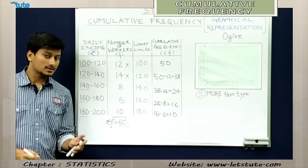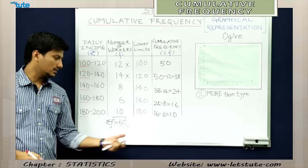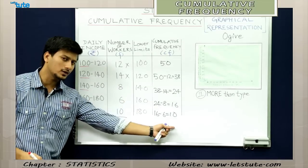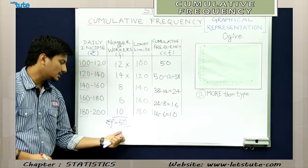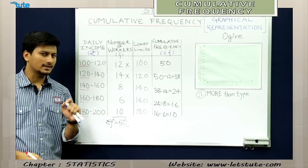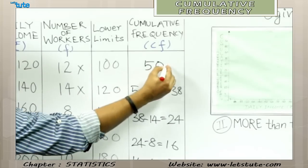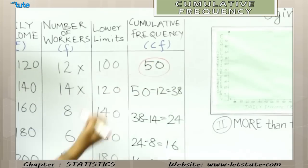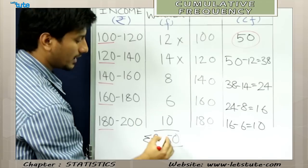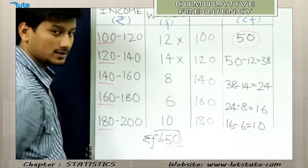Notice that unlike in the less than type, where the last running frequency matches the total frequency, in the more than type it is the first cumulative frequency that should match the total frequency.